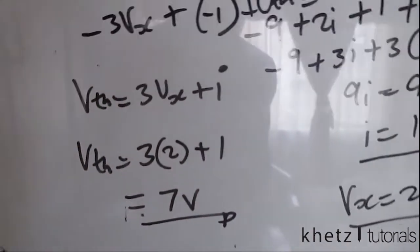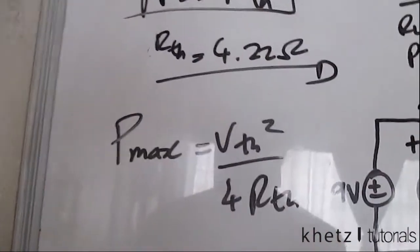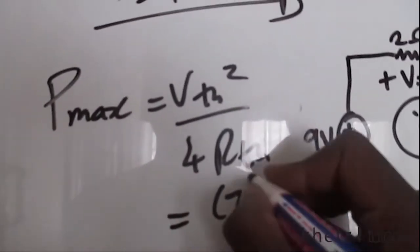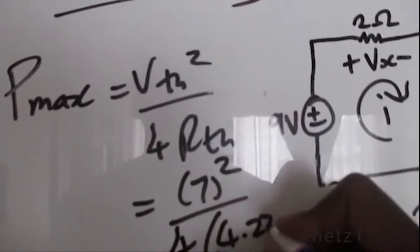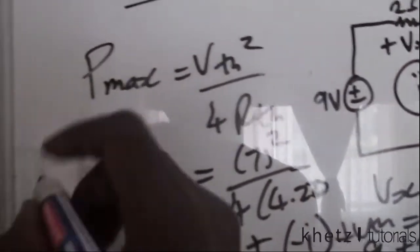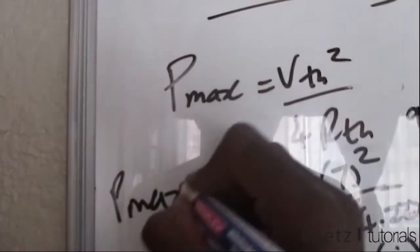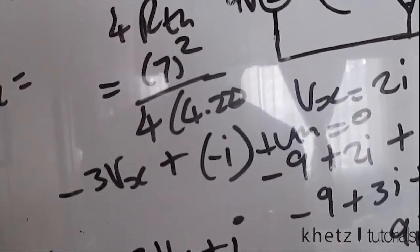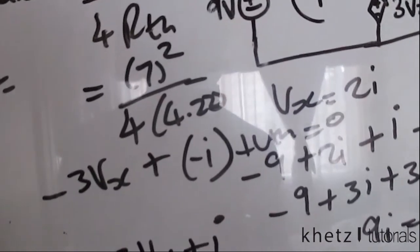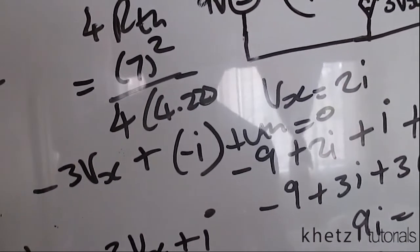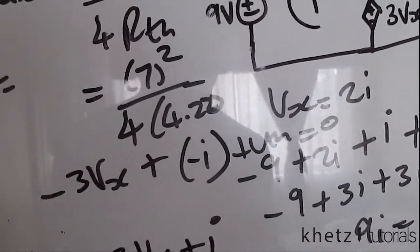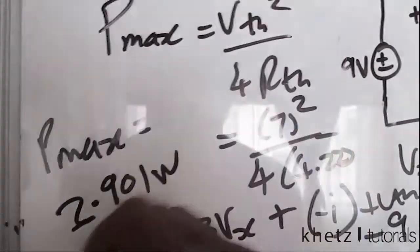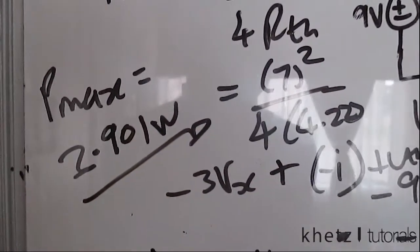Now we can find the maximum power: P_max equals V_th squared divided by (4 × R_th) equals 7 squared divided by (4 × 4.22). Punching that into the calculator gives a P_max of 2.901 watts. That is your maximum power, and that is how you solve this problem.